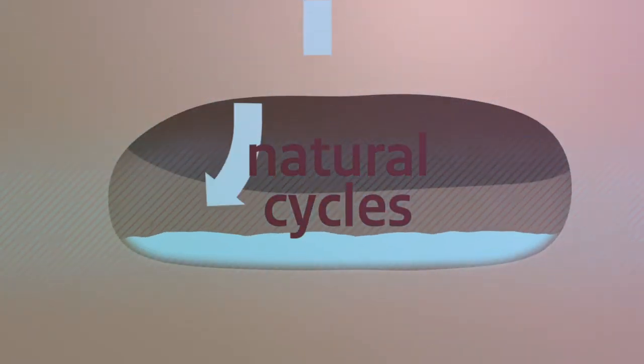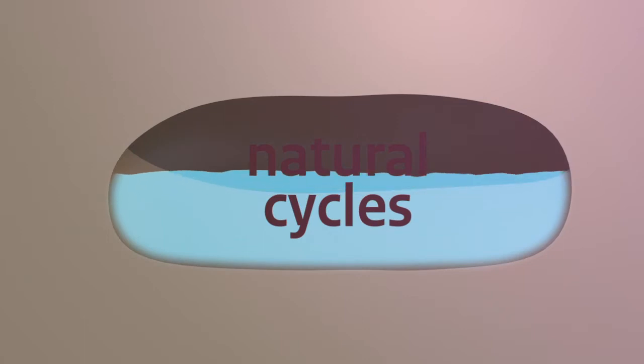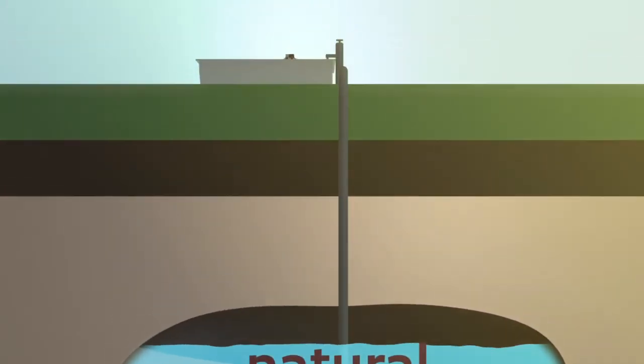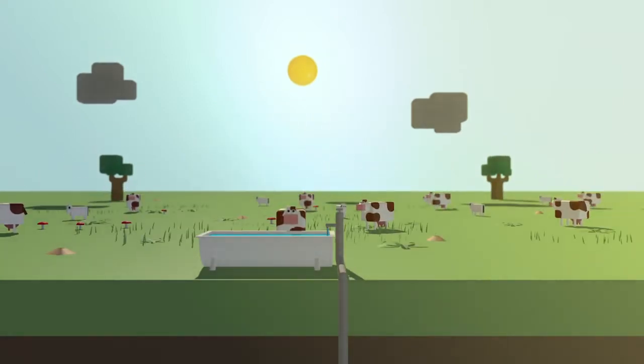But of course there are also the natural cycles under the ground on which we depend. The subsurface purifies water. There is a cycle of nutrients for agriculture and a wide variety of flora and fauna.